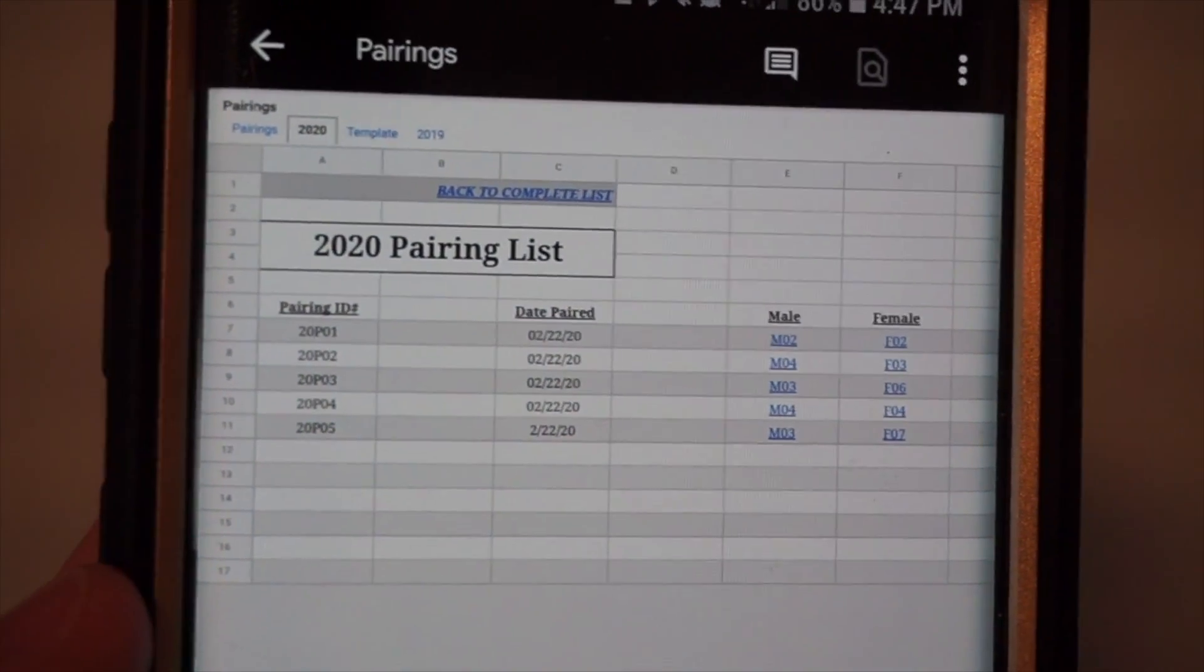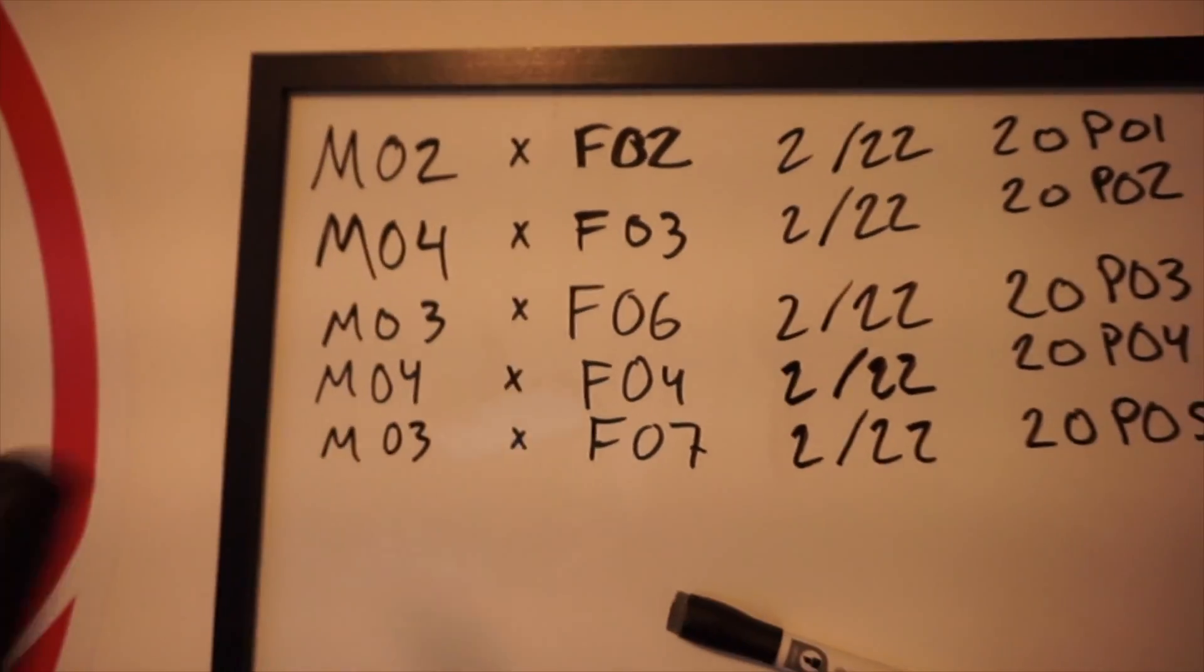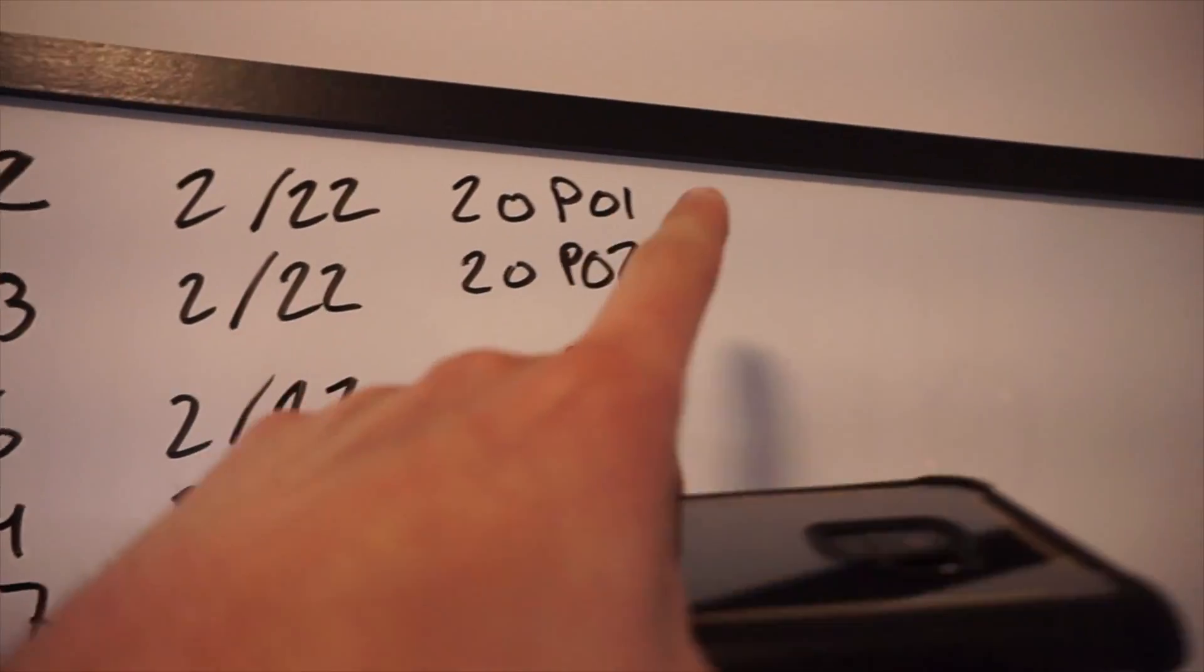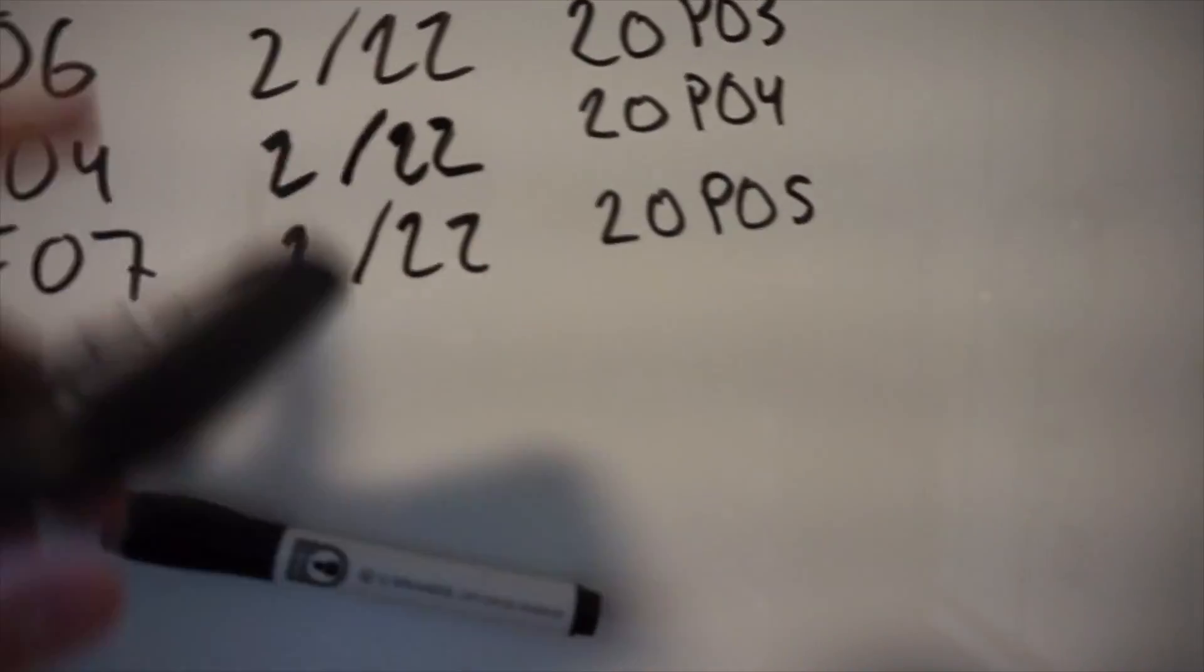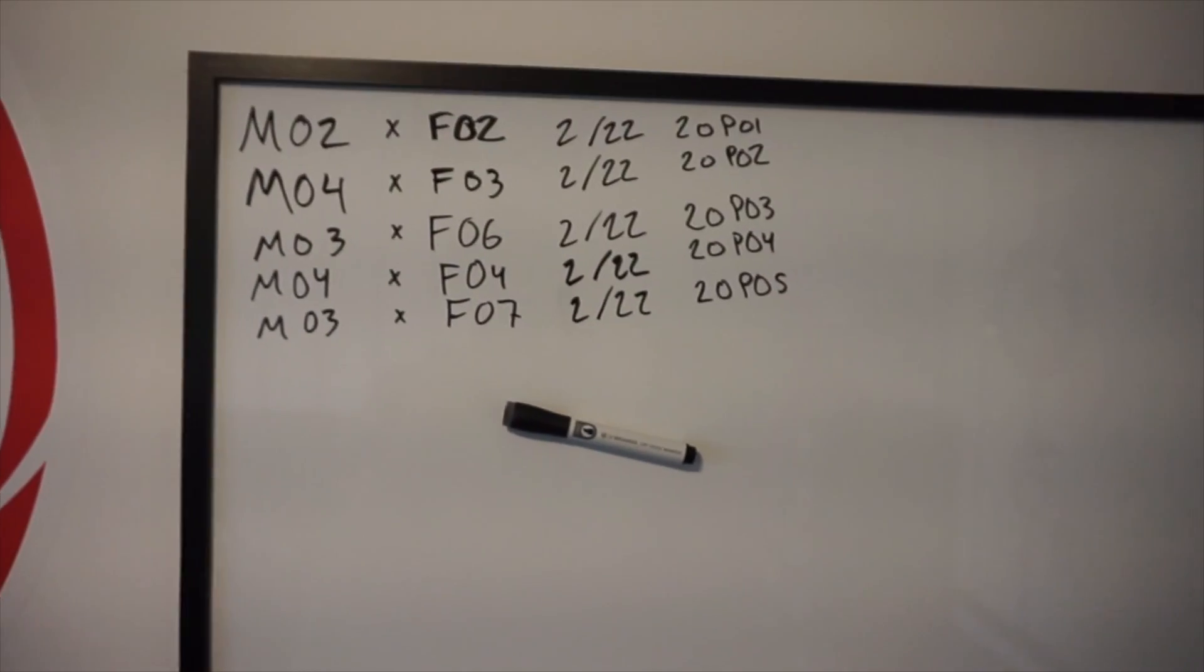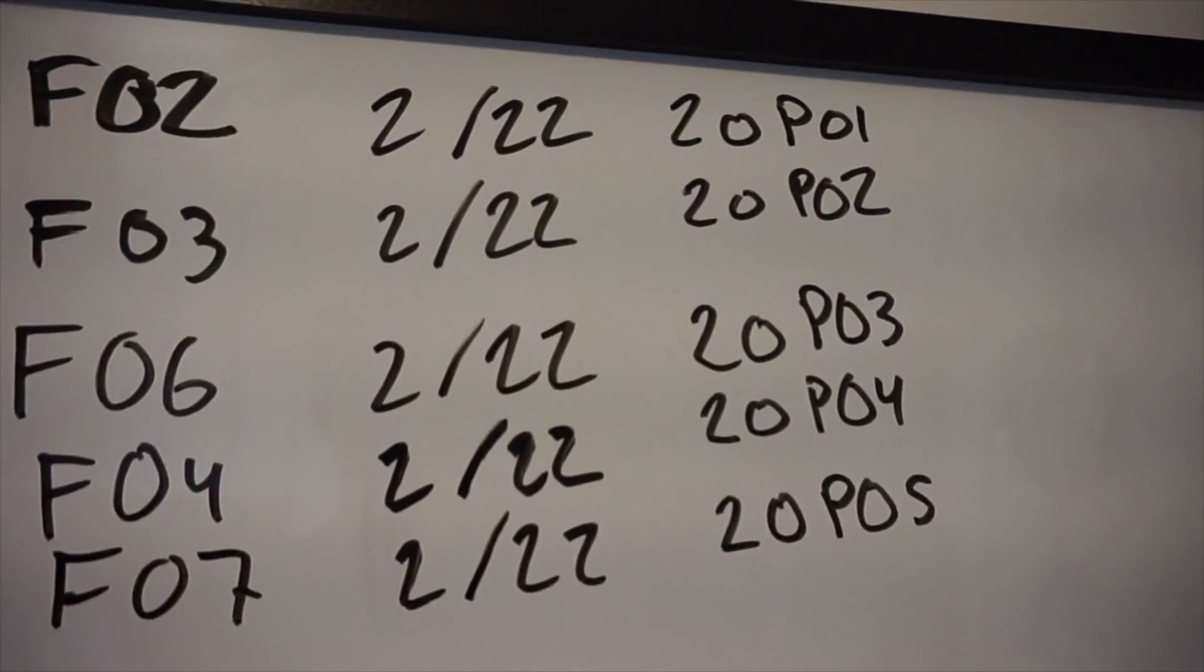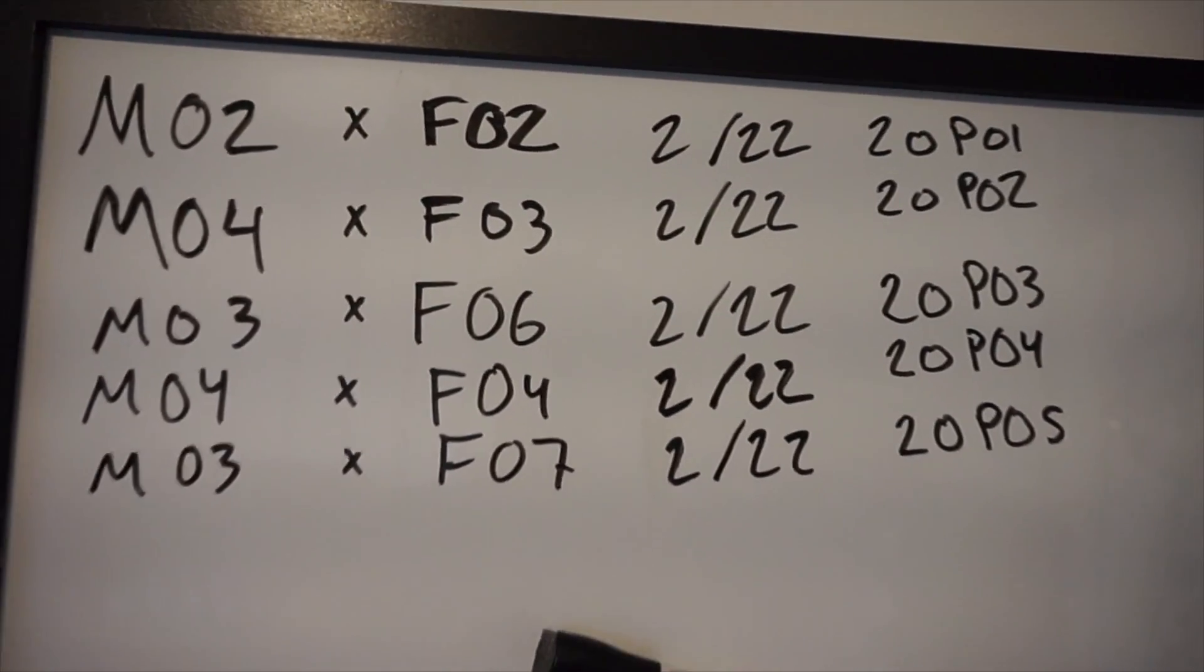Alright, so right here you can see my 2020 pairing list, pairing ID number, the date paired male, female. And then more information, the pairing details, which is pretty much just what I write here. So you can see we've got the males on this side, females on that side, the pairing ID number, 20P01, 2020, P's for pairing, 01, first pairing. 20P02 through P05, P01 through P05 comes down here. We've got the date. These all happened on the same day, which was crazy. We've got five pairings in one day. These are all the males that were involved, only three of them, five females involved, of course. And so now we have the pairings all set up on there so we know when they were paired. So we can pretty much expect eggs probably around the end of this week to the end of next week. It's kind of a wide amount. But I've already checked some of the females for eggs, and I want to show you guys that in a sec.